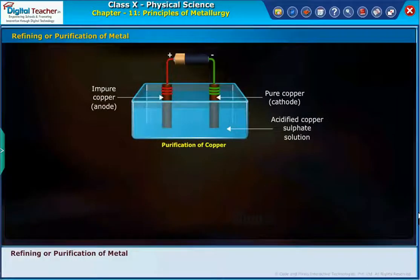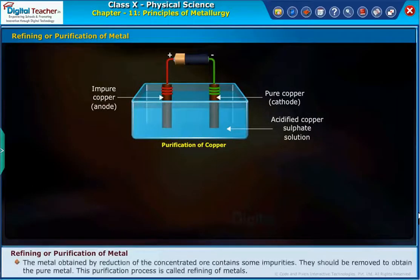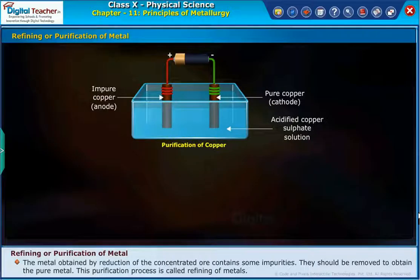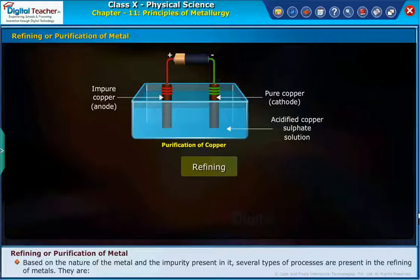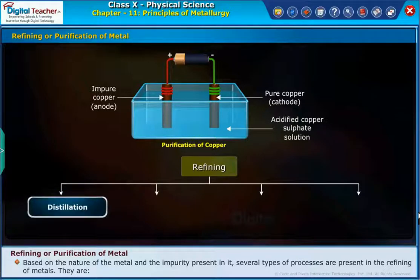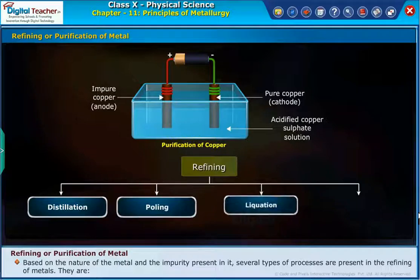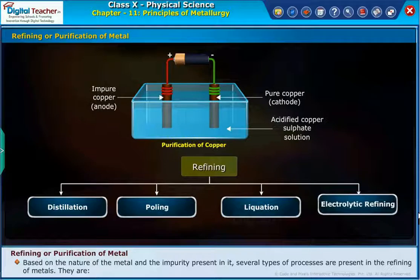Refining or purification of metal: The metal obtained by reduction of the concentrated ore contains some impurities. They should be removed to obtain the pure metal. This purification process is called refining of metals. Based on the nature of the metal and the impurity present in it, several types of processes are used, including distillation, poling, liquation, and electrolytic refining.